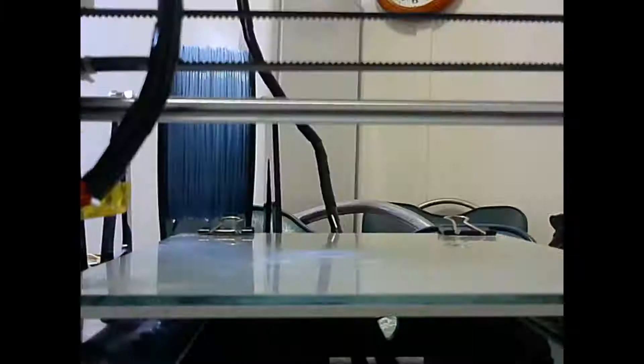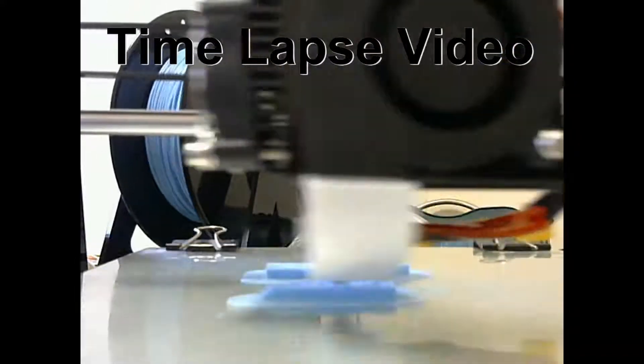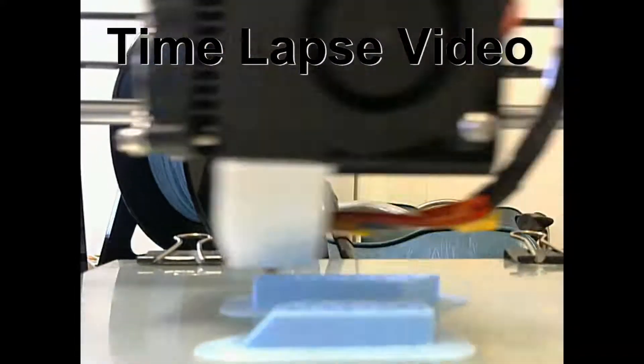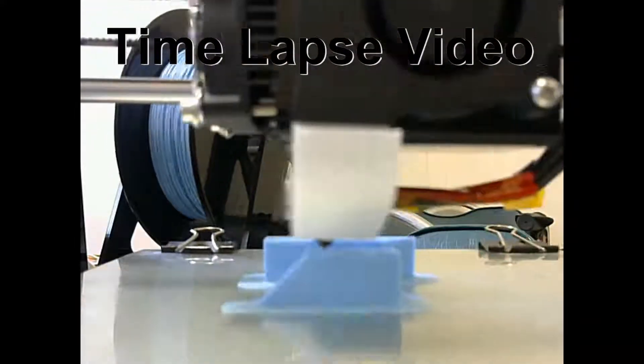I then told my printer to print the first piece with a resolution of 0.1mm layer height with a 15% infill. I used a brim to help the model stick to the glass bed.